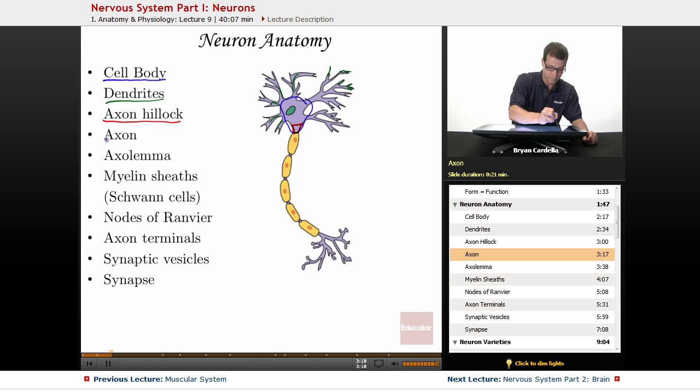So the axon is this classic long part. Now I'm drawing a purple line through those yellow sheets, which will be mentioned in a sec. But the axon is typically long, has to do with sending that electrical signal to some other part of the nervous system.